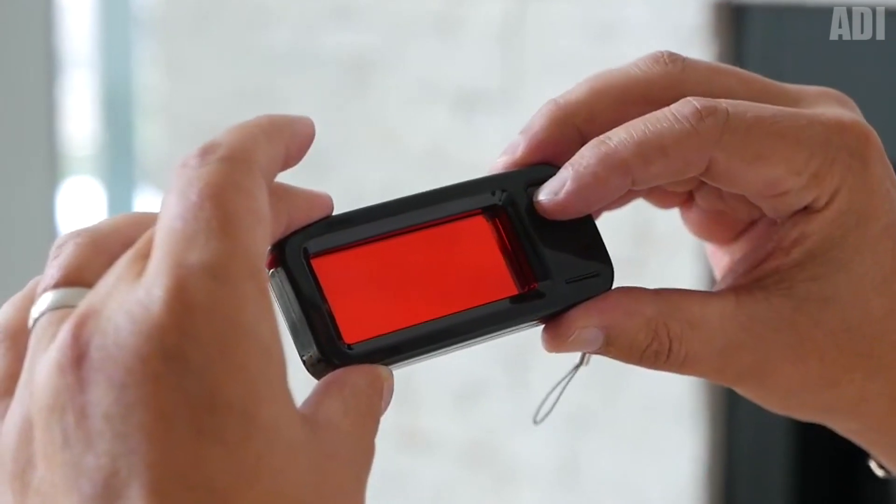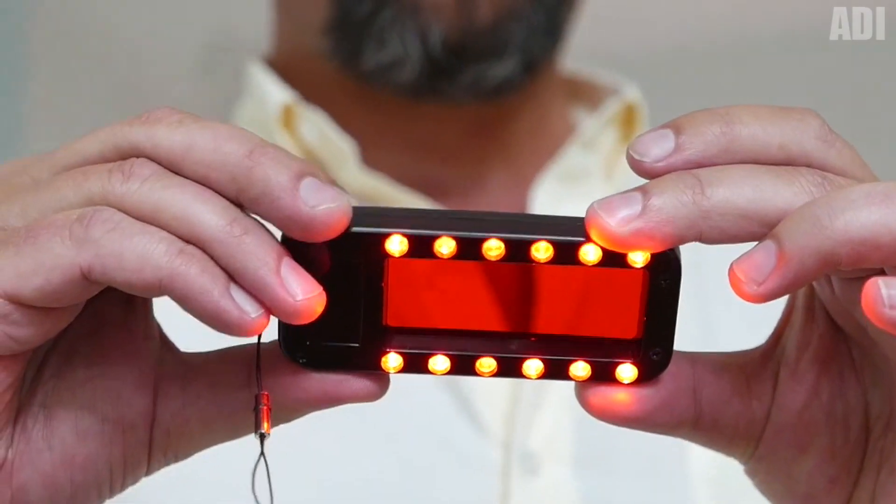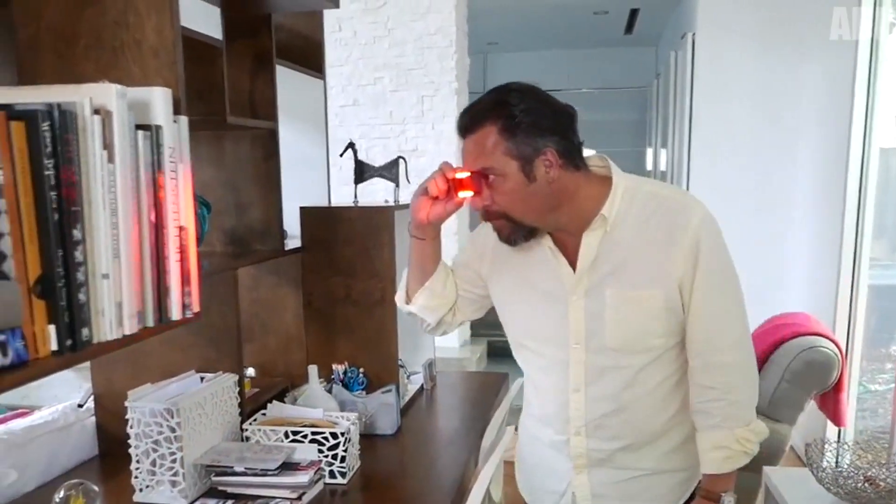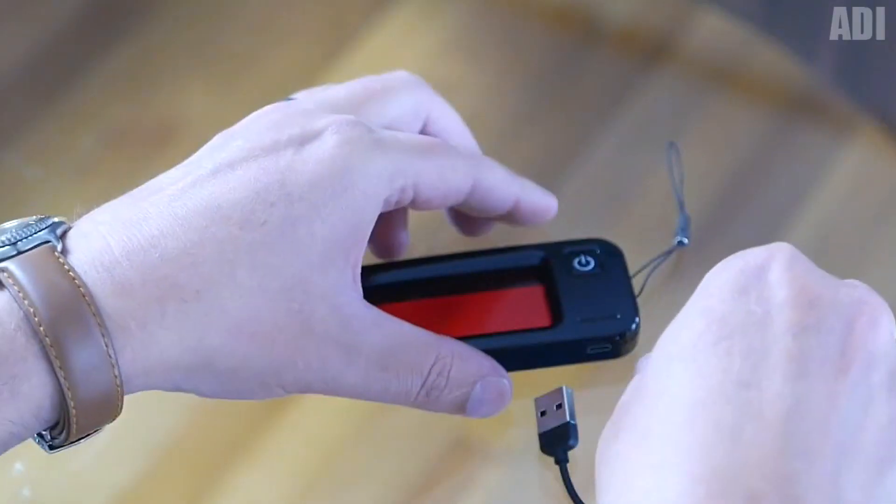You could see this gadget in some films about thieves or detectives. It is a real camera detector. Charge it, bring it to your eye, and look through it at the environment. Due to the special structure of the mechanism, it quickly determines the working cameras around you. They will be detected by such a glow that cannot be confused. If this thing really works, then I would like to play with it. Just to play? Really?